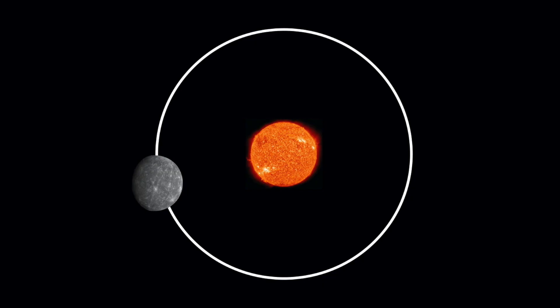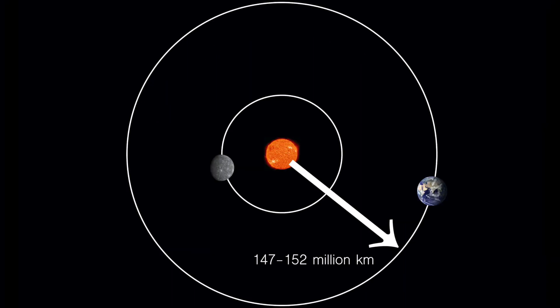Mercury moves in an elliptical orbit, keeping between 46 and 70 million kilometres away from the Sun. That may sound like a vast distance, and it is, but it's less than half the distance between the Earth and the Sun.